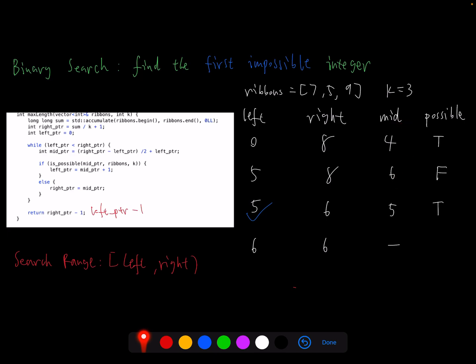Then mid pointer is 6. Six is not possible, so it's false. Then if it's not possible, right pointer will be equal to mid pointer. So we update right to 6. Then our mid pointer is 5 this time. So 5 is possible because we have one, one, one. So it's true. Then if it's possible, left pointer equals mid pointer plus one. So we have 6 here.